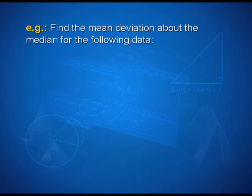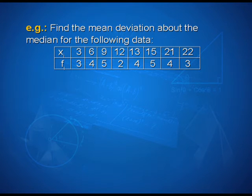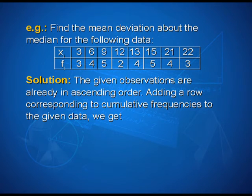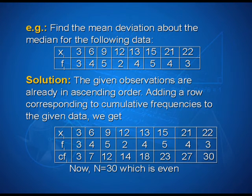Find the mean deviation about the median for the following data: xi: 3, 6, 9, 12, 13, 15, 21, 22 with fi: 3, 4, 5, 2, 4, 5, 4, 3. The observations are already in ascending order. Cumulative frequencies are: 3, 7, 12, 14, 18, 23, 27, 30. So N = 30, which is even.